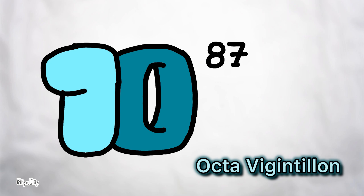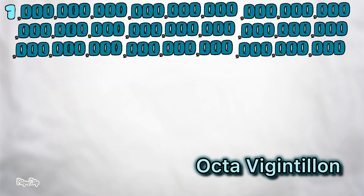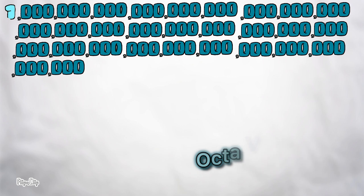Vigintilian, made up of 84 zeros, 10 to the power of 84, also what we call 10 with an exponential of 87.